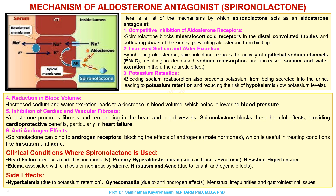5. Inhibition of cardiac and vascular fibrosis. Aldosterone promotes fibrosis and remodeling in the heart and blood vessels. Spironolactone blocks these harmful effects, providing cardioprotective benefits, particularly in heart failure.